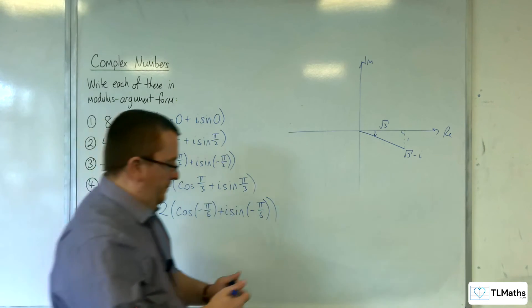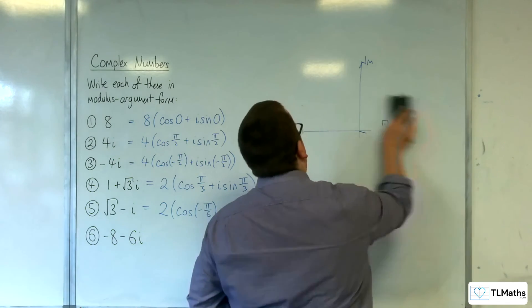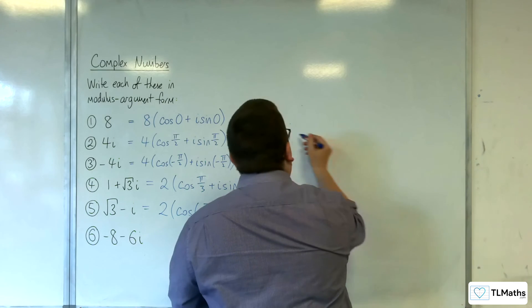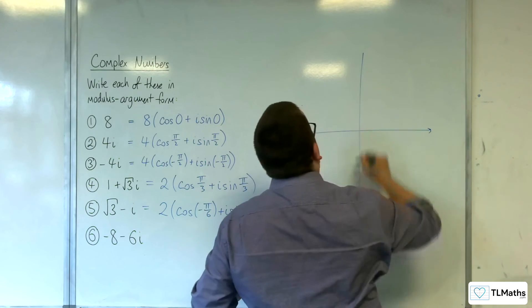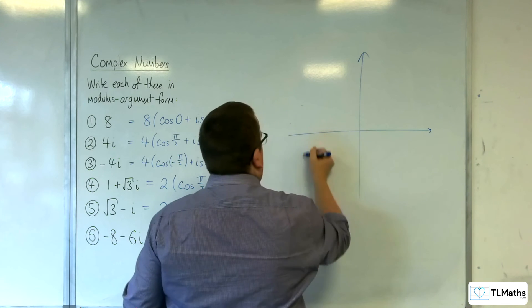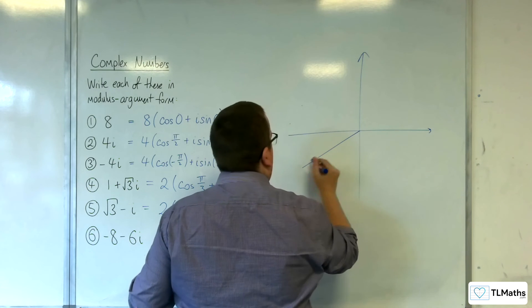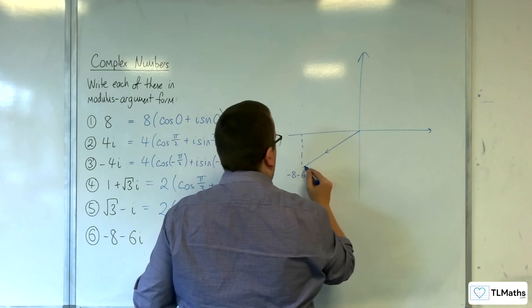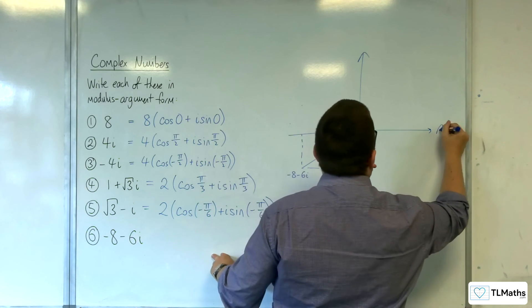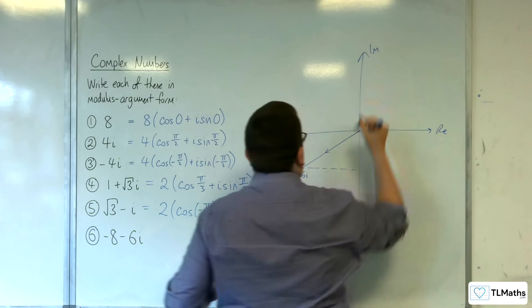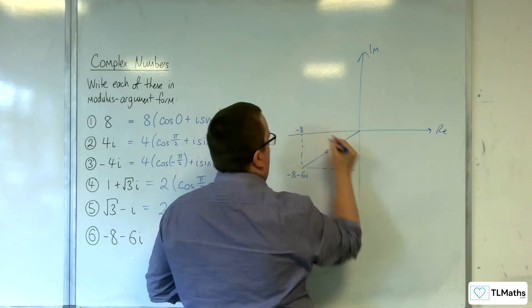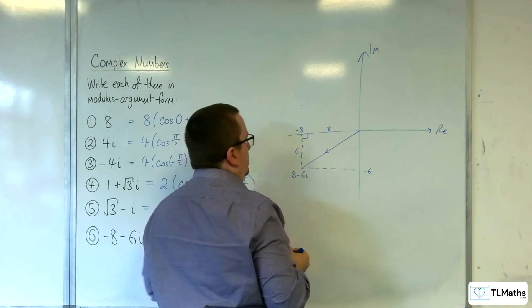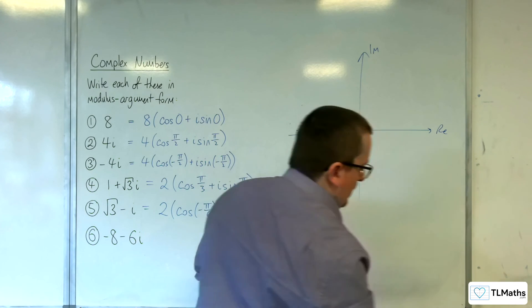Right, last one: minus 8 take away 6i. So minus 8 take away 6i, somewhere down here. That's minus 8, that's minus 6. So that's 8, that's 6, like that.